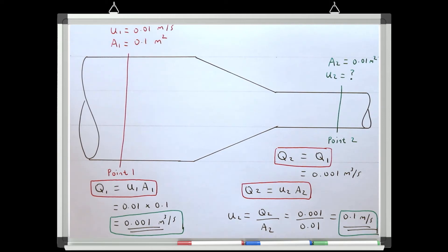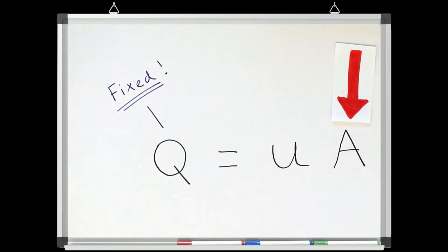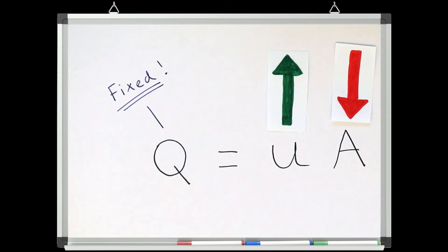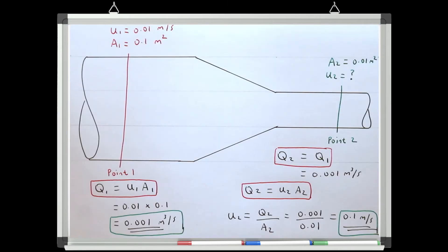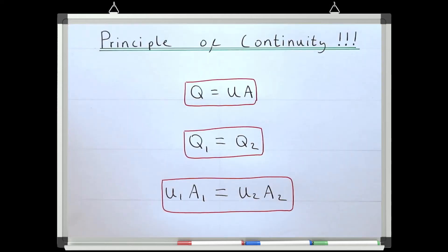Here we have shown mathematically what we know intuitively. If we decrease the diameter of a pipe and the discharge remains constant, the velocity in the pipe must increase to allow the same volume per unit time to pass through the system. So for pipe flow, we know that for any instant in time, the discharge is always the same at every point in the flow, so we can always use the continuity equation.